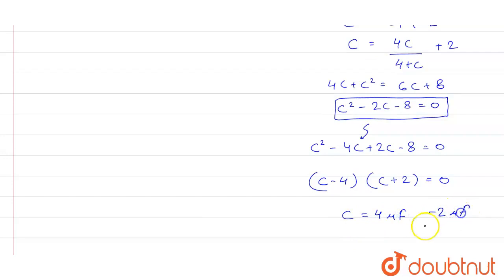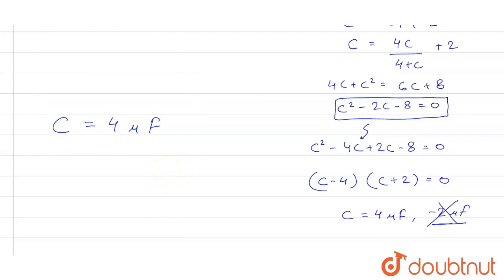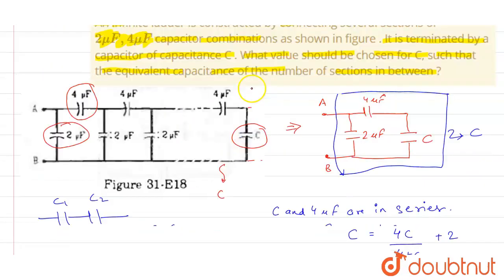Using middle term splitting: C² - 4C + 2C - 8 = 0, which gives (C - 4)(C + 2) = 0. This gives the value of C as four microfarad or minus two microfarad. Since capacitance cannot be negative, we eliminate the negative value. Therefore, the value of C is equal to four microfarad. You will need a four microfarad capacitance to terminate the whole section. Four microfarad is our answer.